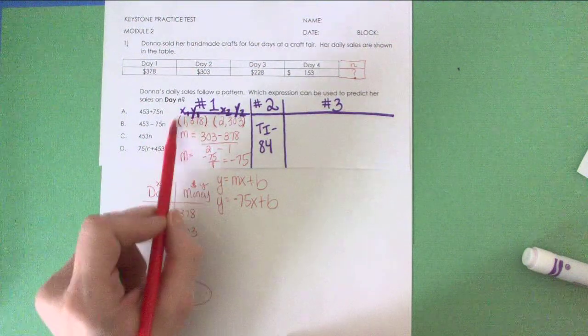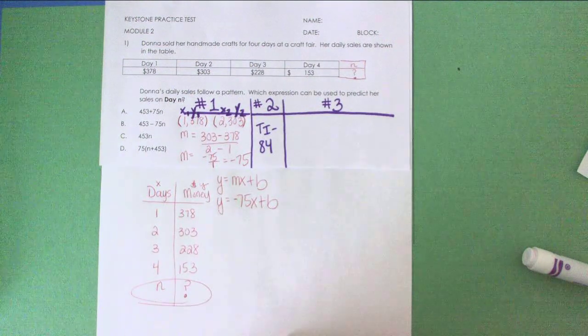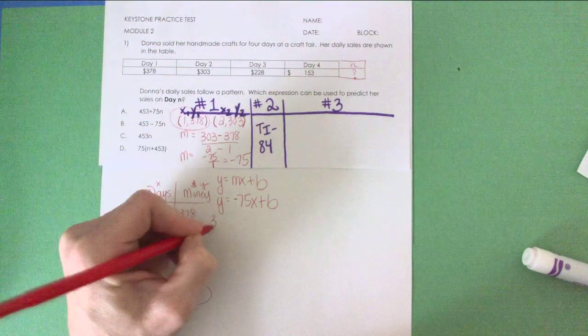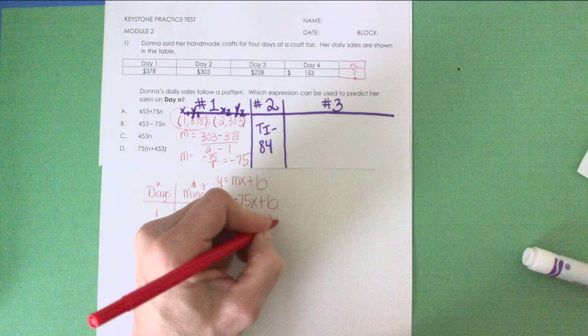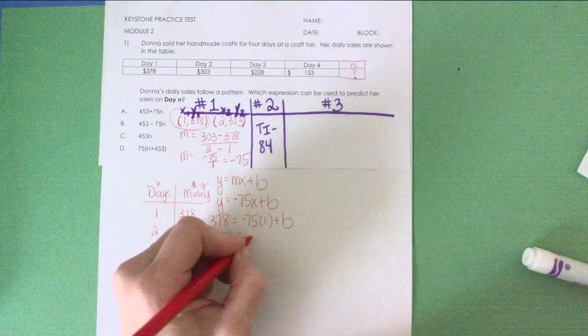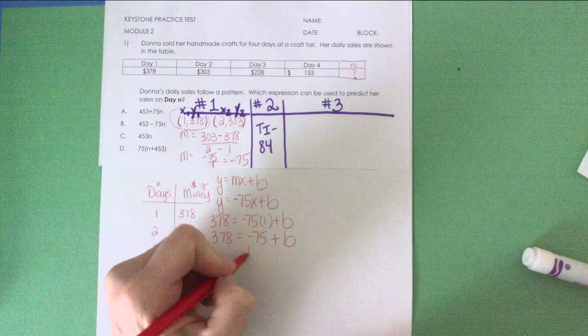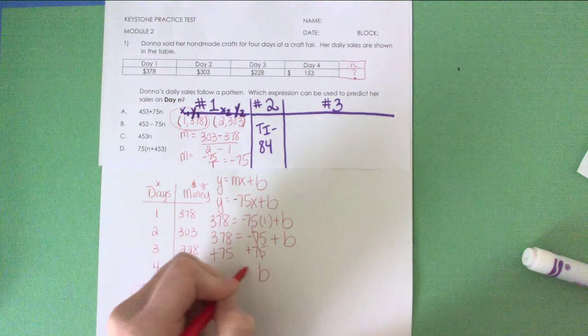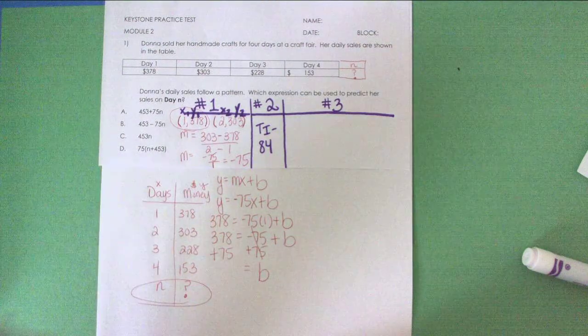My final step is to figure out what B is. To do that, I can take either one of these ordered pairs that I chose and insert them for X and Y. So I typically use the first set. My Y value in this set is 378, my X value is 1, and I'm going to solve for B. So I have 378 equals negative 75 plus B. To solve for B, I'm going to add 75 to both sides, giving me B equals 378 plus 75, which is 453.